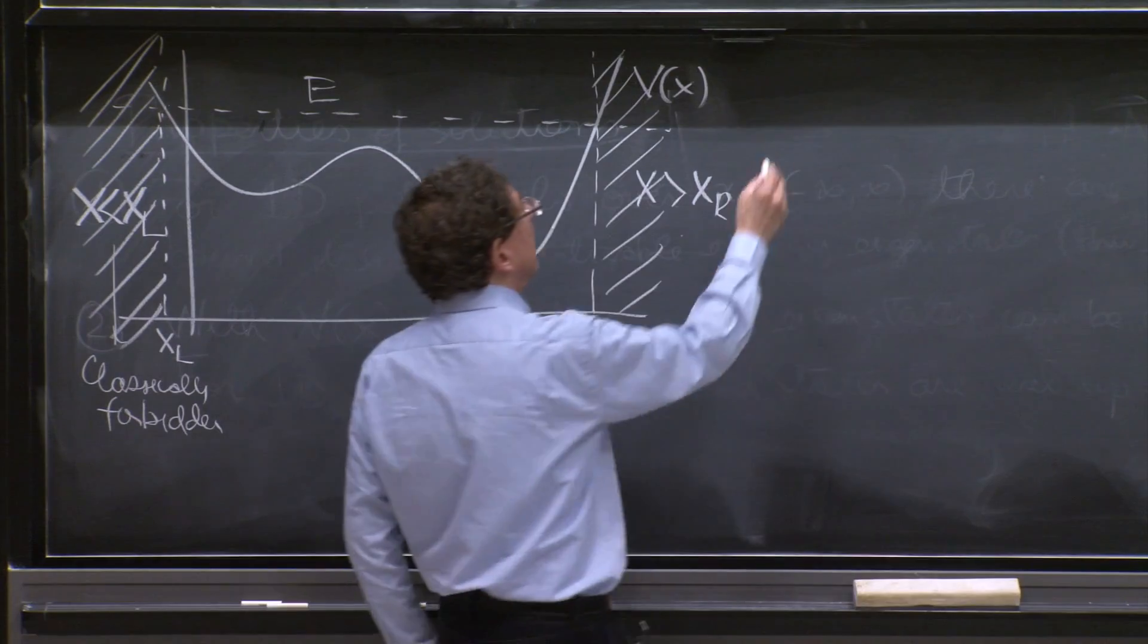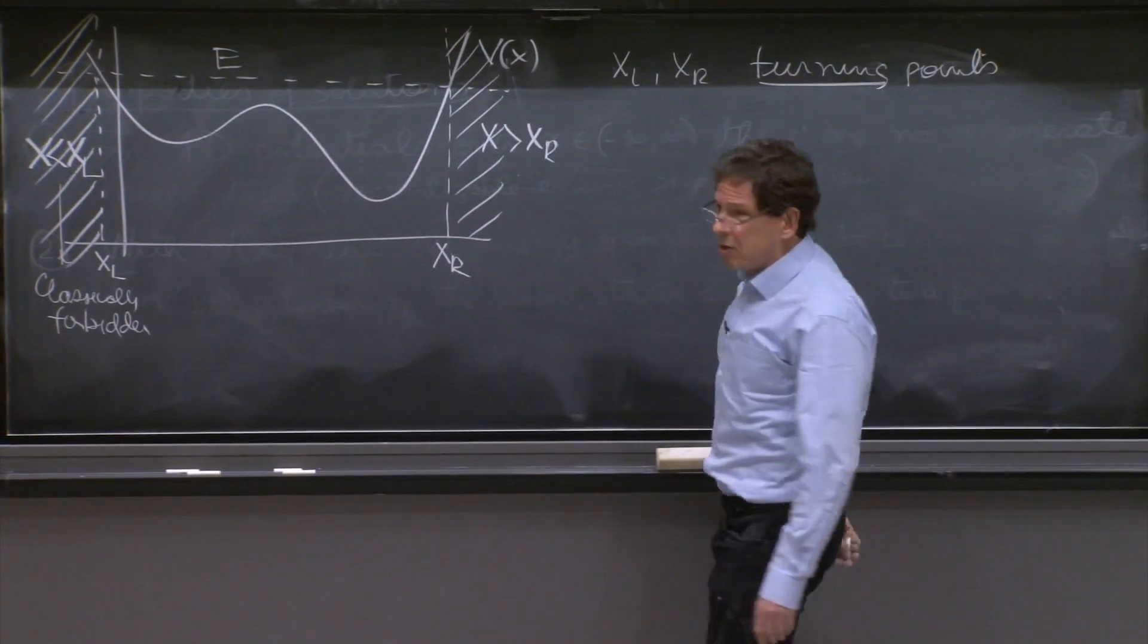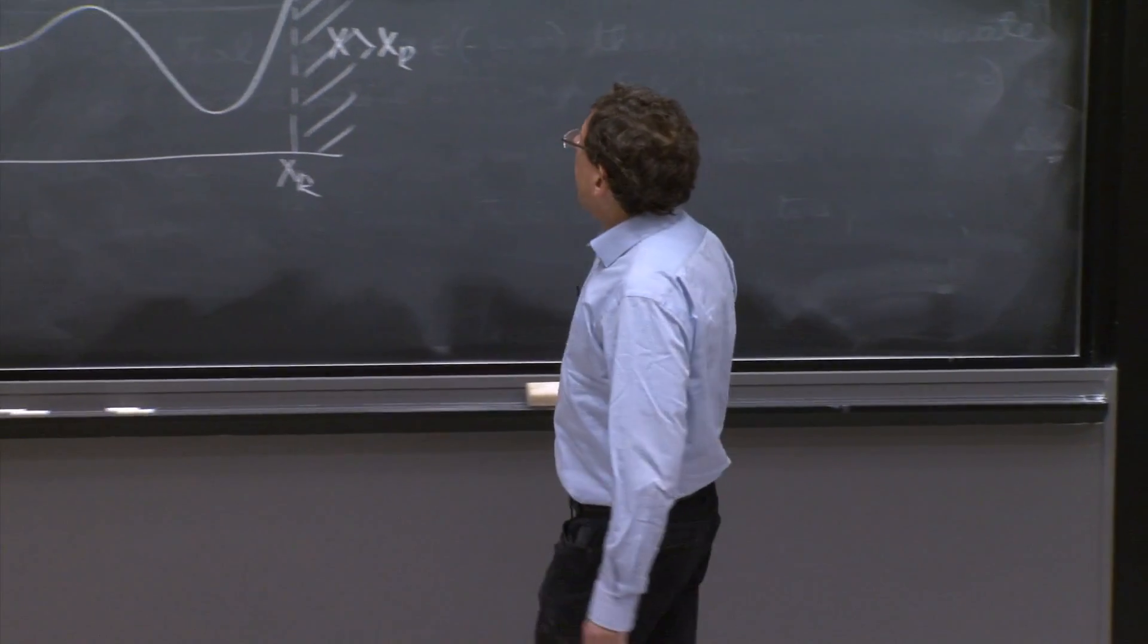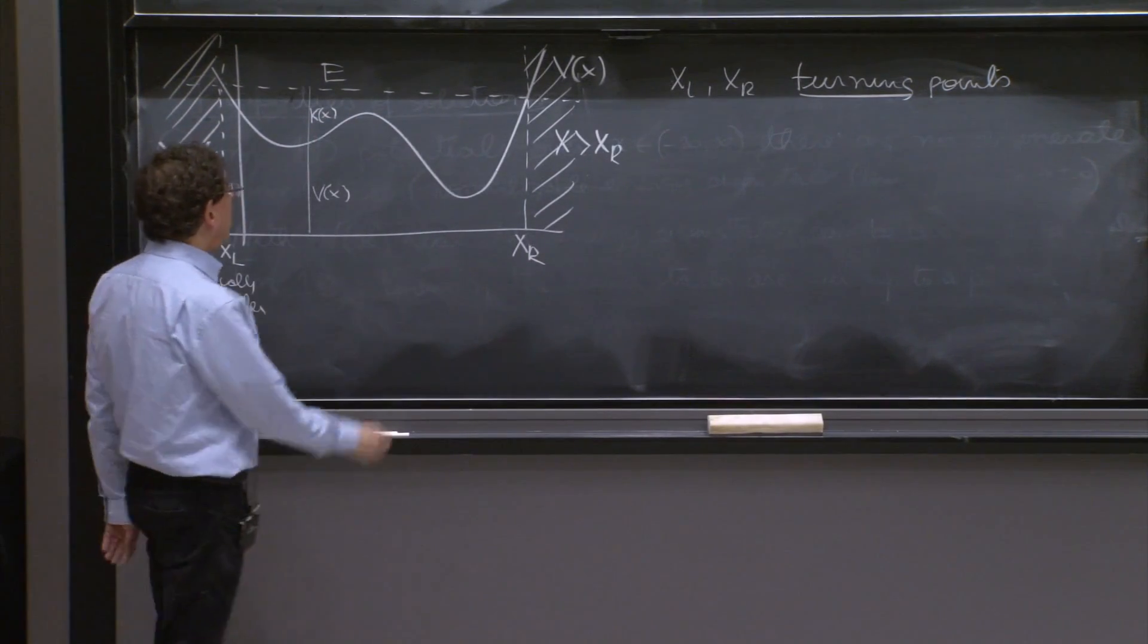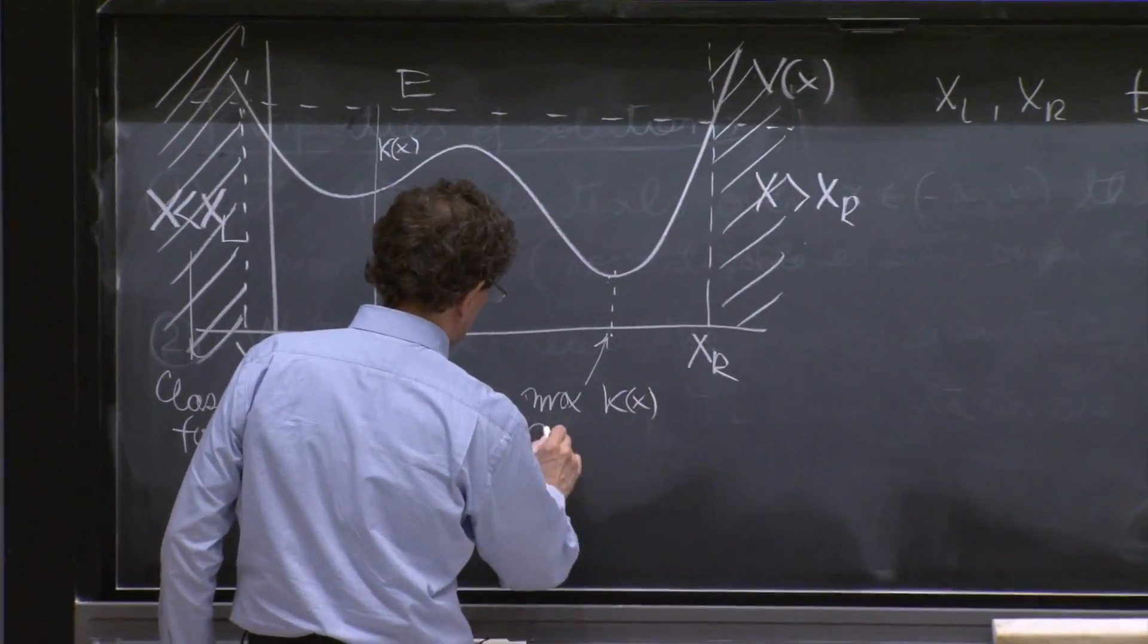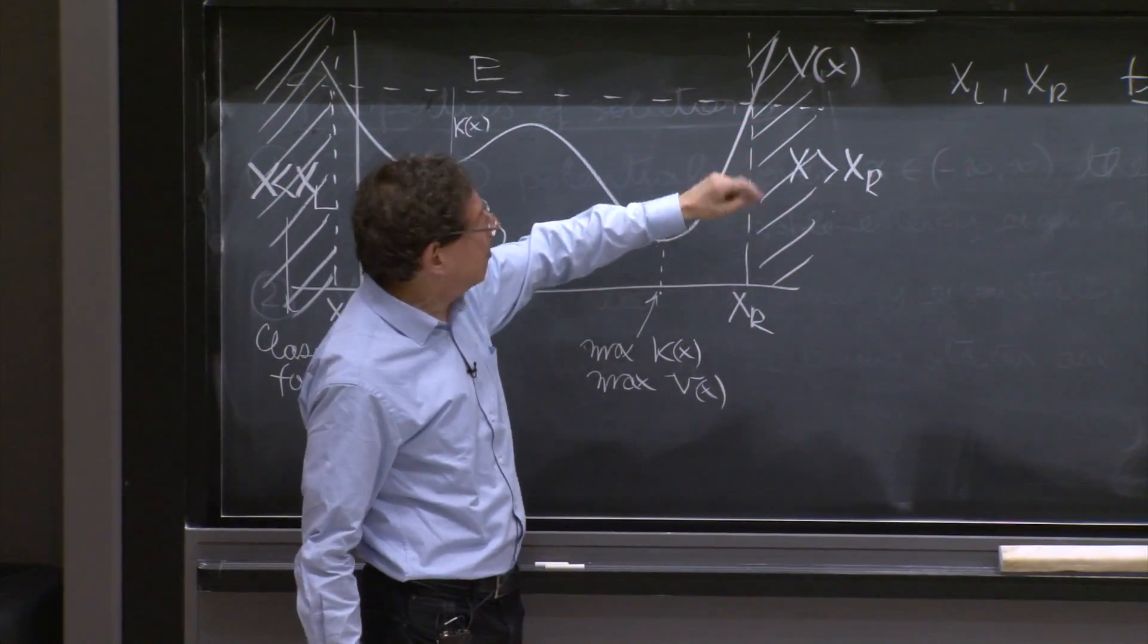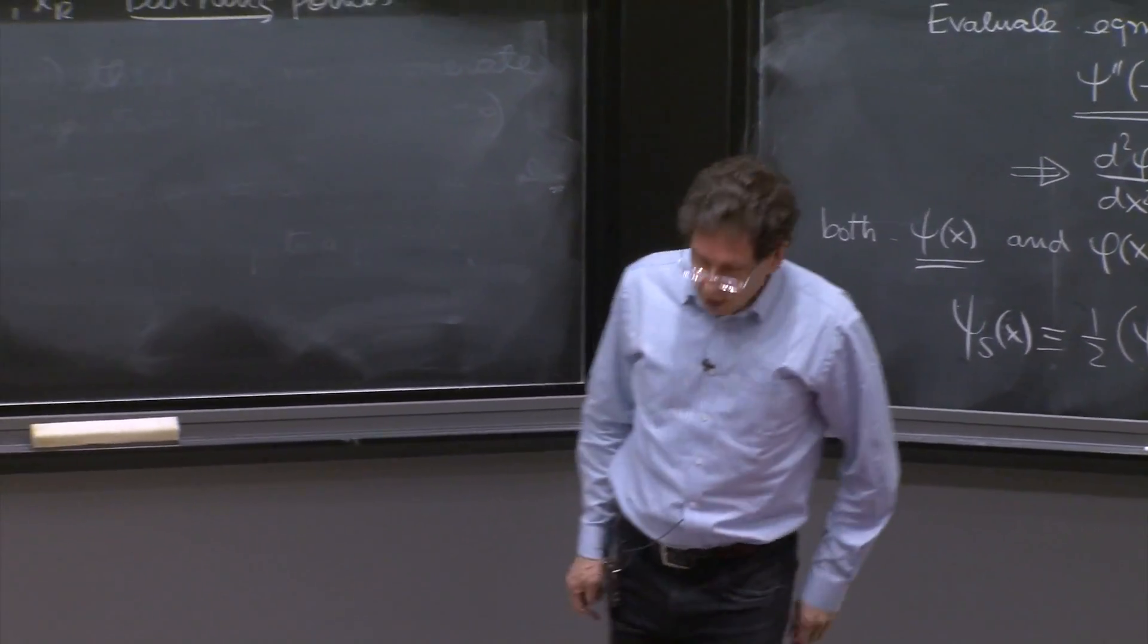These points x left and x right are called turning points. Because those are the points where a particle, a classical particle that lives in this potential, has to bounce back and turn. As we mentioned, at any general point, you have V of x and K of x. And this point, for example, is the point with maximum K of x or maximum velocity. This is the point where the particle is moving the fastest. And it always kind of slows down as it reaches the turning point, because the kinetic energy is becoming smaller and smaller.